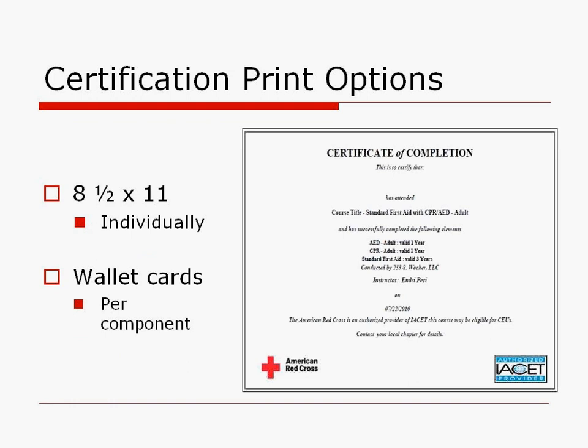We have a new option for printing certifications: an 8.5 by 11 sheet of paper that has all the components on it — the course title, the different components, the instructor, and both the Red Cross logo and the ISET logo. This certificate can be printed on regular standard computer paper in color or in black and white. This is also a good option in case your students lose a certificate — you can reprint it at any time with all the information on it.